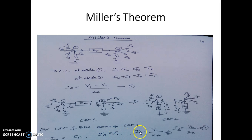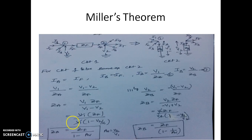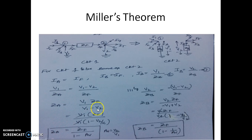IA = V1 / ZA and IB = V2 / ZB. Setting IA = IF and IB = -IF, and substituting the expression for IF, we solve for ZA and ZB. The expression for ZA works out to ZF divided by (1 - AV), where AV is the voltage gain, the ratio of V2 to V1 — that is, output over input.